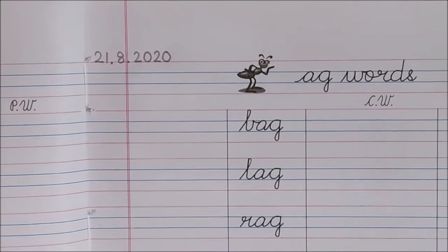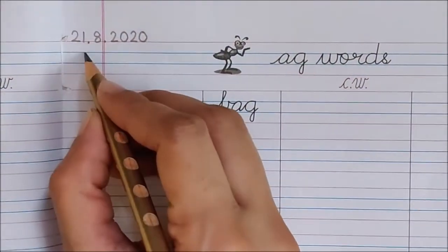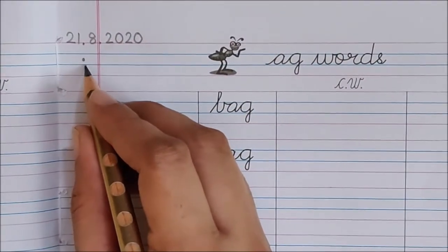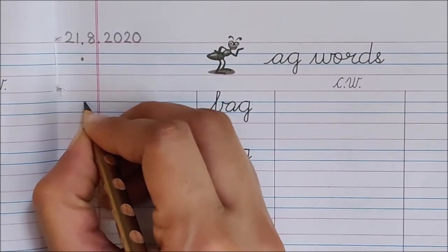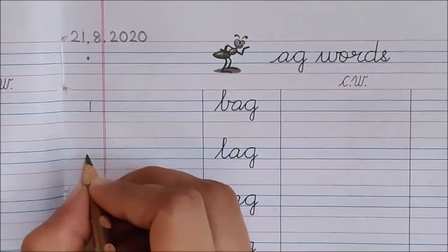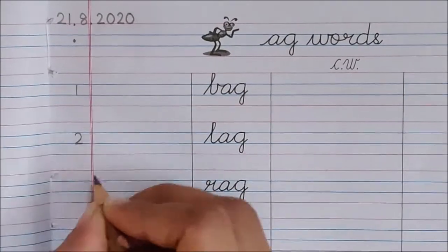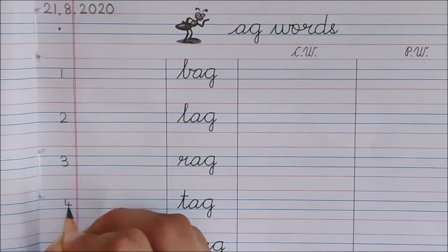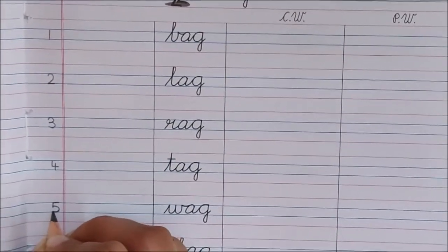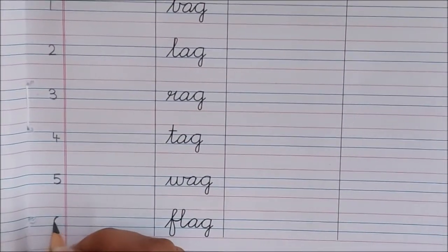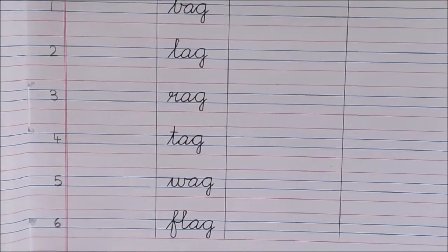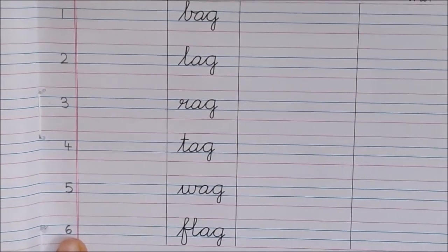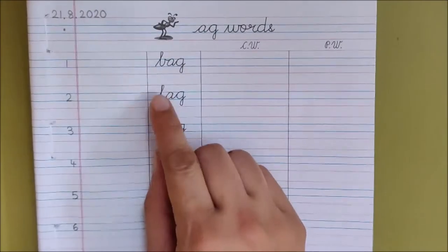Okay children. Now children, below the date put a dot. Now below the dot in the first margin write down here 1, then write down 2, 3, 4, 5, 6. Okay children, we have written 6 here because we have 6 words on this page.